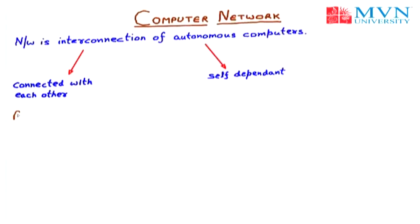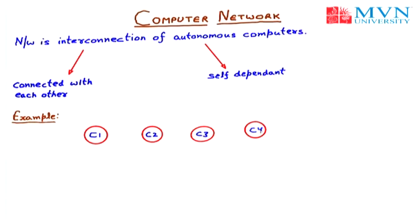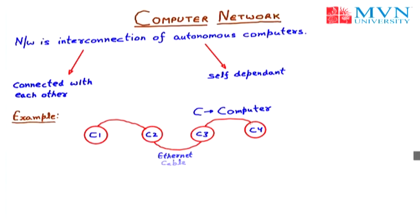Let us take the example of a computer network. We have four computers named C1, C2, C3, and C4, where C stands for computer. These four computers are all connected with each other via Ethernet cable, so they are interconnected and automated. This complete diagram is called a computer network. We can use networks all over the world — WWW (World Wide Web) and the Internet are all examples of computer networks.